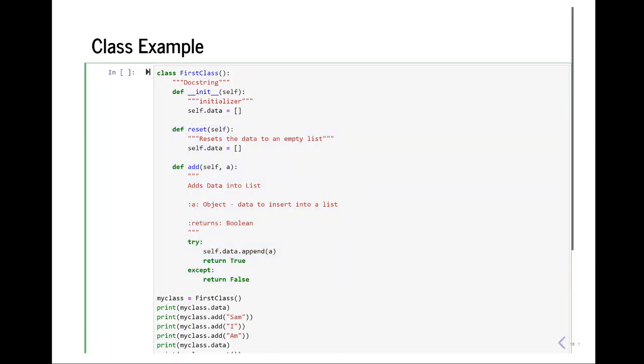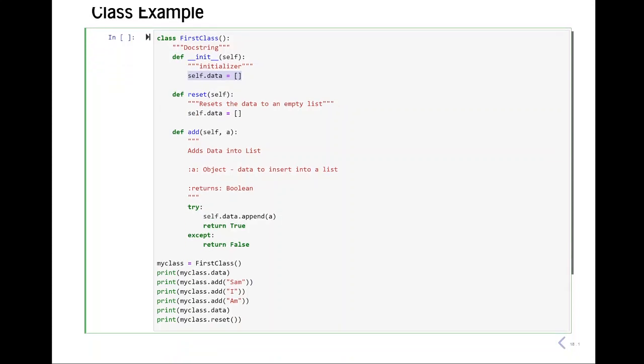I also declare two other functions called reset, and add. First, let's take a look at what reset does. And I said in my docstring that resets, it resets the data to an empty list. So, all it does is do self.data equals empty list. So, we're just resetting that empty variable, that data variable back to itself. And then we have an add function. So, we have add self, comma, a. a is an object and the data can be serrated into the list and it's going to return a boolean. And here I'm using some exception handling. And I'm saying, try if you can insert the value into the list, return true, but when an error is raised, return false.